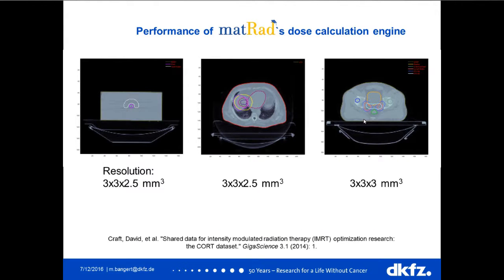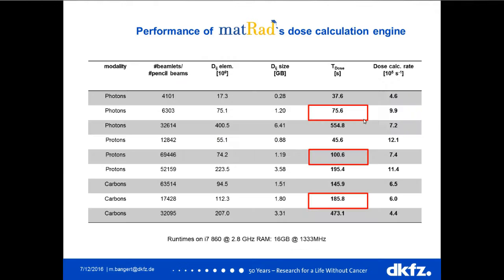We evaluated the performance of the dose calculation engine on the CORT dataset, including the TG119 phantom, a liver case, and a prostate case. For photon treatment plans with about 6,300 beamlets the calculation takes about one and a half minutes. For proton treatment plans with 70,000 pencil beams it's about two minutes. For carbon ion treatment plans with roughly 17,000 pencil beams it's about three minutes of computation time.